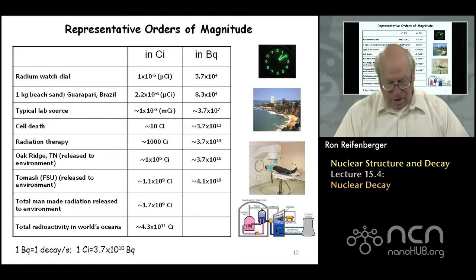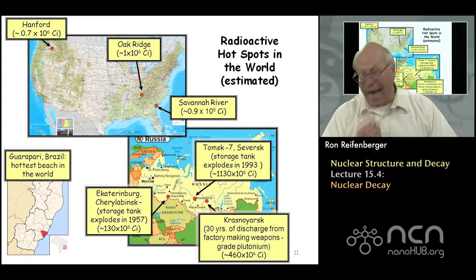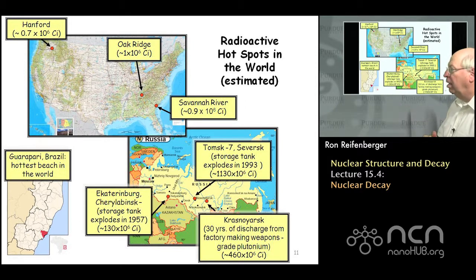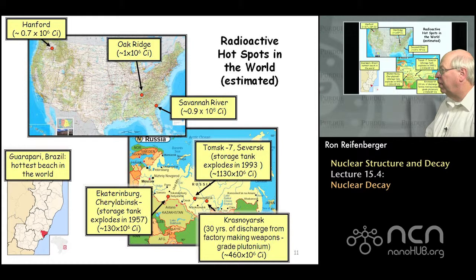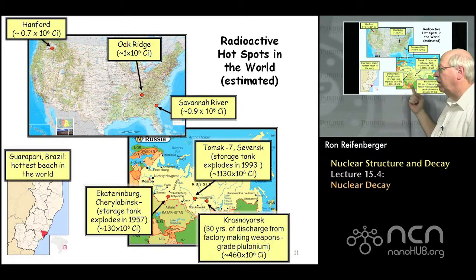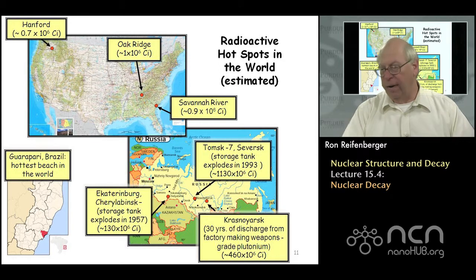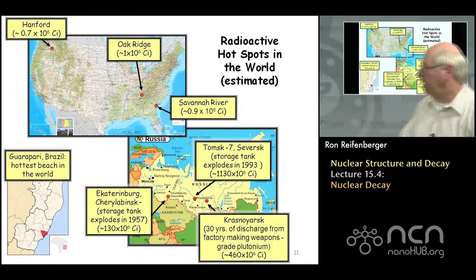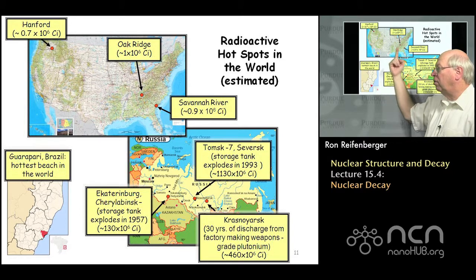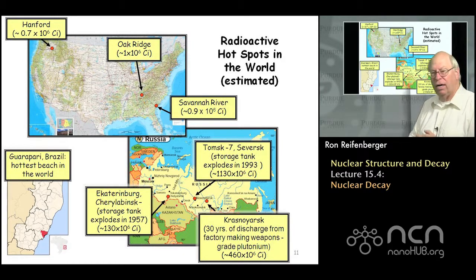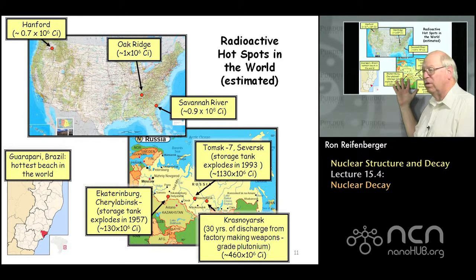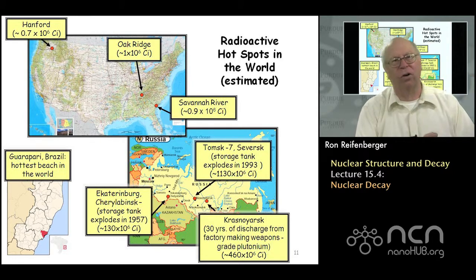A plot of the radioactive hotspots in the world estimates the different types of radioactivity measured in various locations. The beach in Brazil is reportedly the hottest natural beach. The Soviet Union has two or three sites that have produced huge environmental radioactivity contamination for various reasons. In the United States, sites in Washington, Oak Ridge Tennessee, and the Savannah River Nuclear Project have also released a fair amount of radioactivity, but not nearly as much as reported from accidents in the Soviet Union.